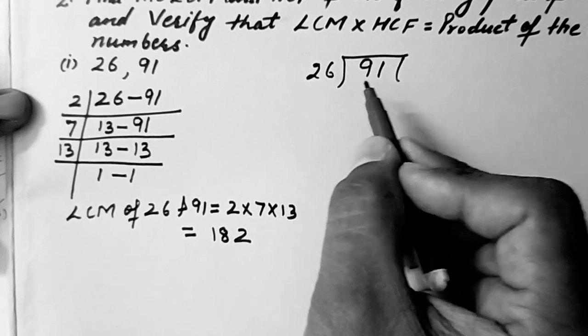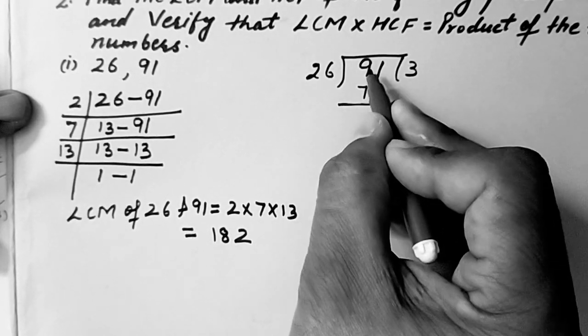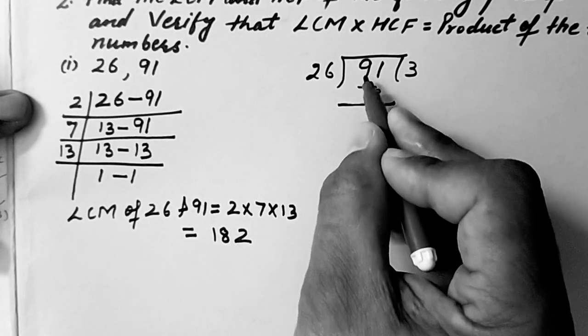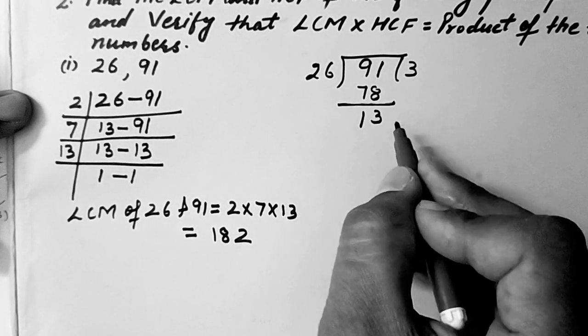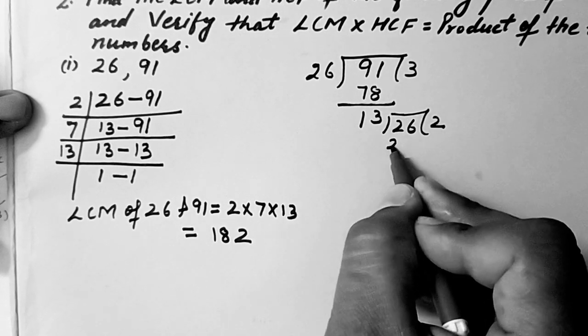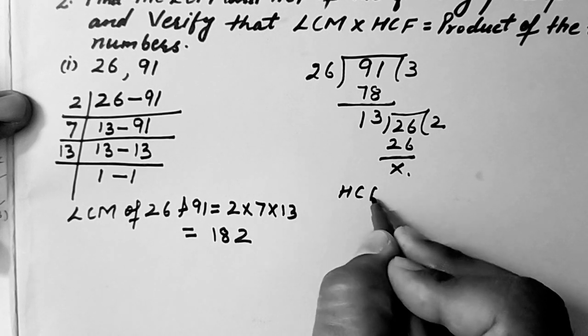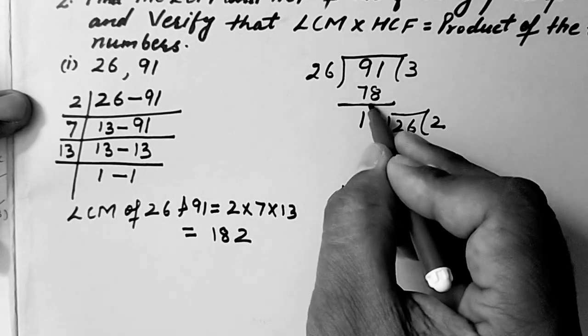So it is going with 26 threes are 78. So 11 minus 8 is 3 then 1 is left. Now this 26 becomes here dividend. So 13 twos are 26. So HCF of these two numbers is 13.